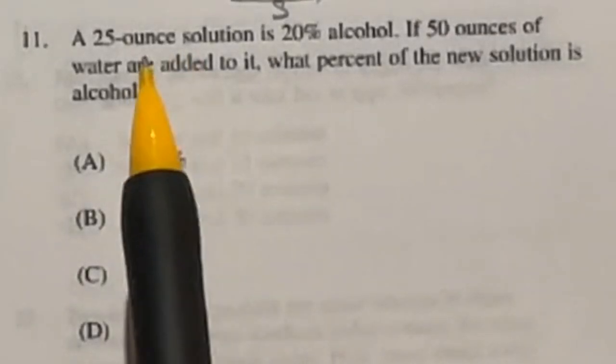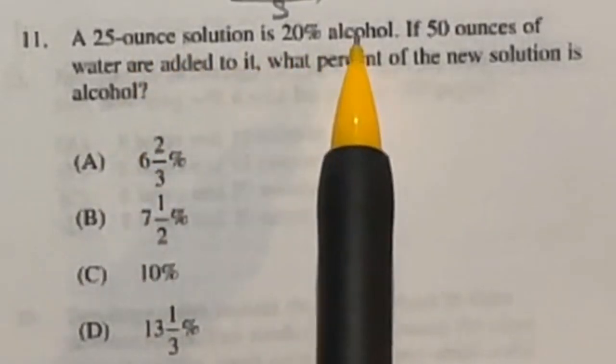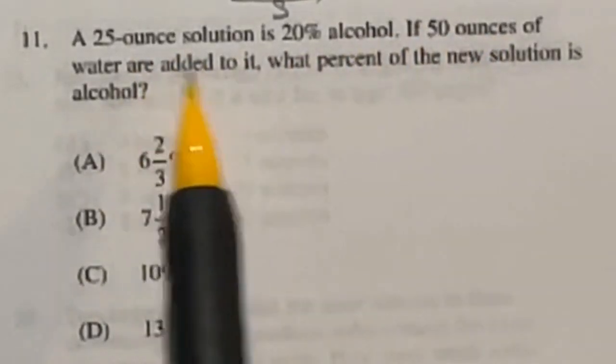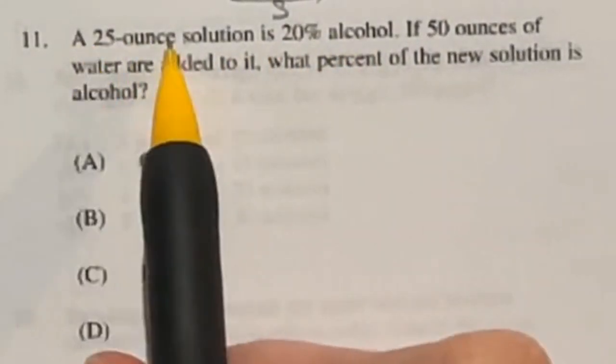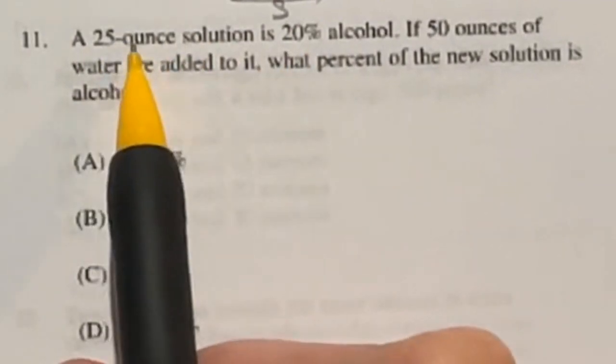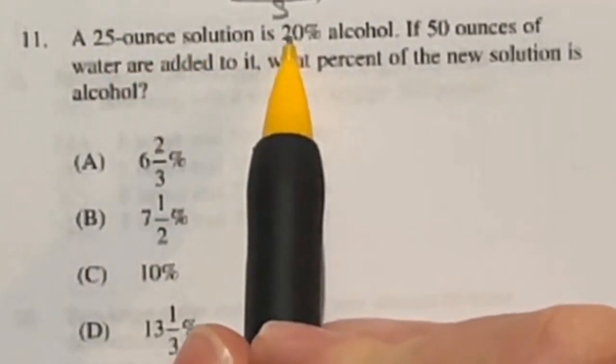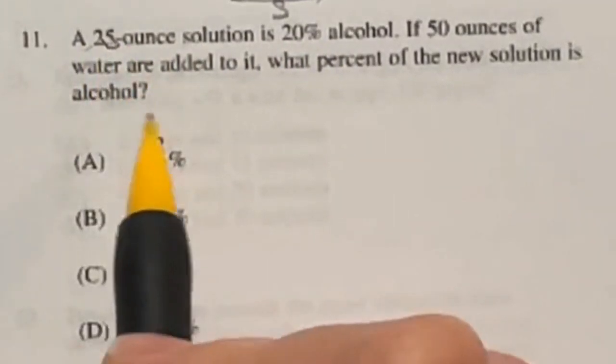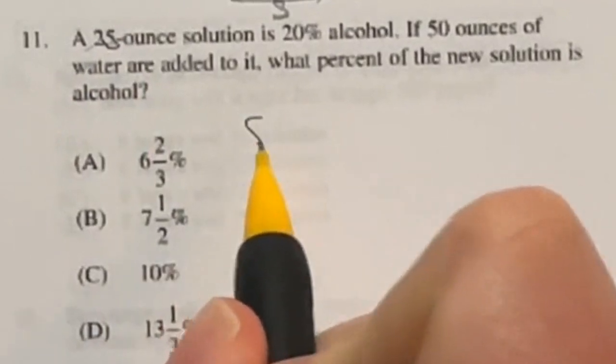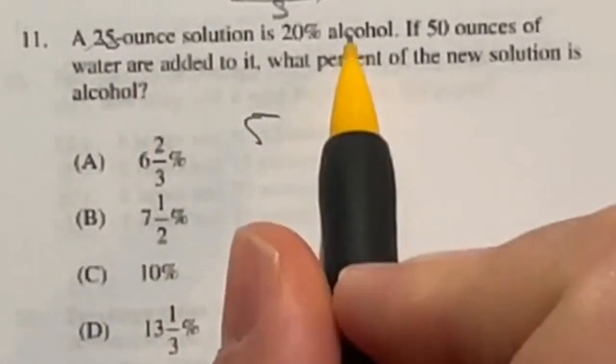For number 11, it says that we have a 25-ounce solution that's 20% alcohol, 50 ounces of water are added. What percent of the solution is now alcohol? First off, how much alcohol was in this original solution? 20% of the 25. Well, 20% is just 10% plus 10%. 10% you can find easily by moving the decimal place over one. So 2.5 times 2 says that our original had 5 ounces of alcohol.